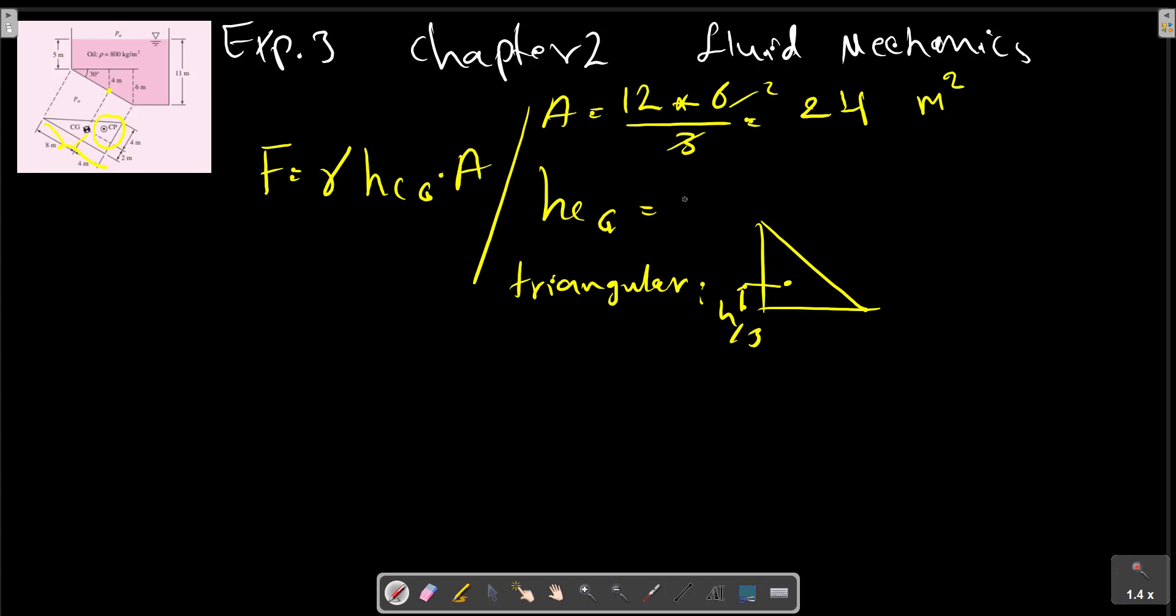This calculation has been done before in this picture. So, HCG equals 5, this distance, plus 4. This distance is 6, and we can calculate this as 4 with the similarity of this rectangle. So, we can write 5 plus 4 equals 9 meters.